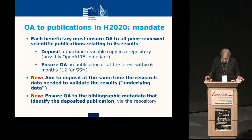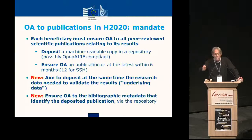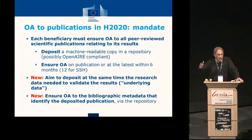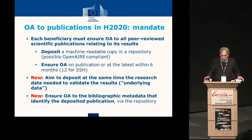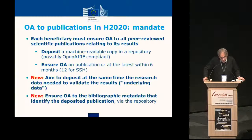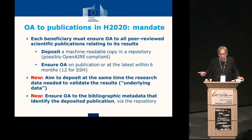Our open access policy has several dimensions. Open access to publications — here it's a mandate. In Horizon 2020, as far as publications are concerned, the policy is simple: everything you publish should be in open access. We are agnostic — we have no religion, we are neither gold nor green, we allow both models. The important thing is that the philosophy behind is openness. What we have added in Horizon 2020 is the idea of promoting that when authors put a paper in open access, they also deposit the data underpinning the paper — which has a lot of links to text and data mining.